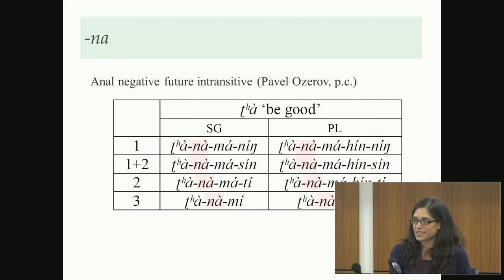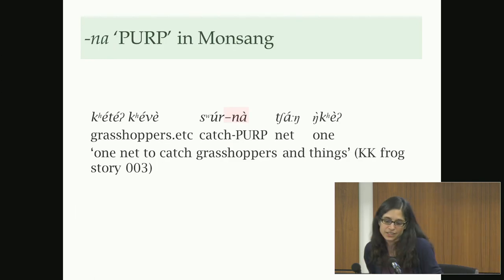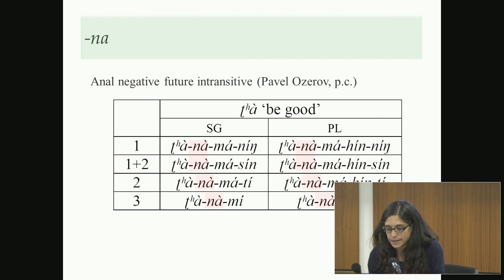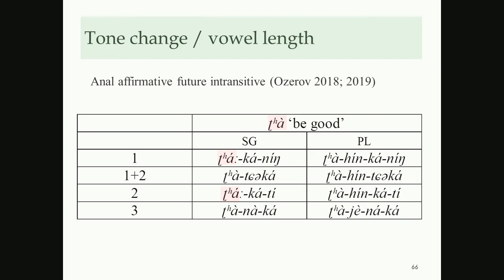In Monsang, 'na' is used as a purpose nominalizer — again the purpose function we also saw with 'rong'. That would be plausible here too. In the negative future, 'na' is the regular expression for future in Anal. Interestingly, in affirmative future it seems like you also originally have 'na', at least in third person: 'trana me' — 'it is not good' — where 'me' is the negative and 'trana' has one of the equational copulas.